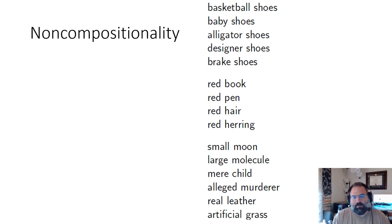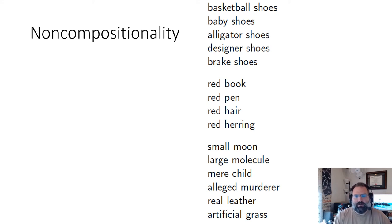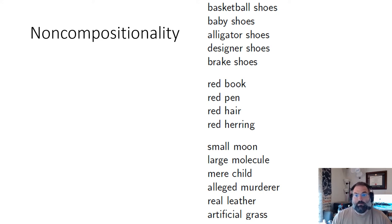Non-compositionality: when you combine things together, they can oftentimes take on very different meanings. Red book versus red pencil versus red hair versus red herring — you can't just stick them together and think it's going to work out. It's very complex, based on placement in the sentence and context. Types of shoes: basketball shoes is a type of shoe; baby shoe; alligator shoe — referring to what it's made of; designer shoe; and brake shoe — very different sorts of things. You can't just assume they all refer to something that goes on your feet. It's a mixture of class, use, who's going to wear it, and what it's made of.